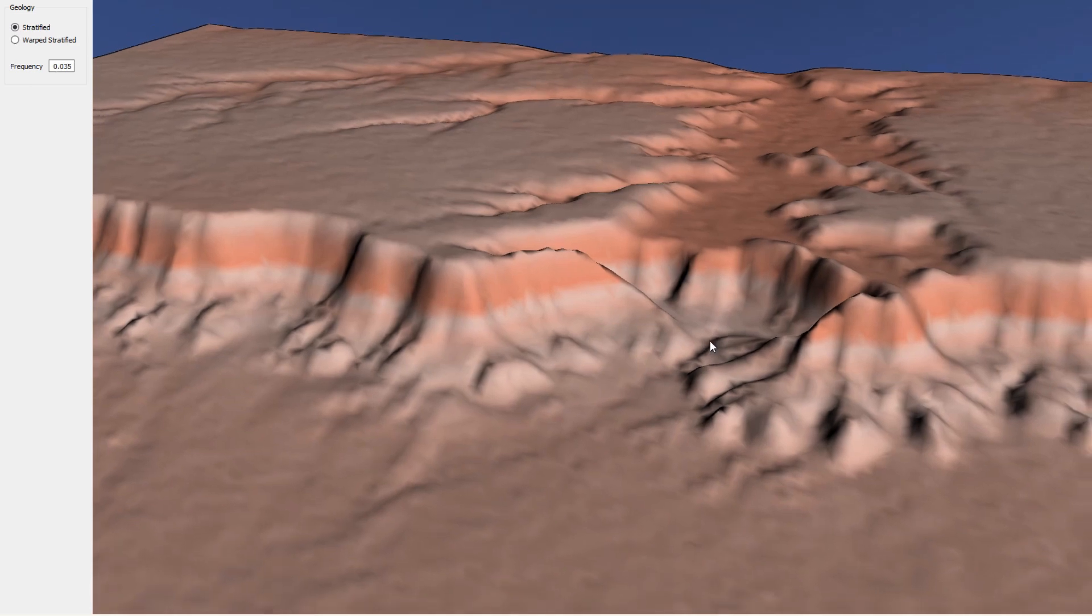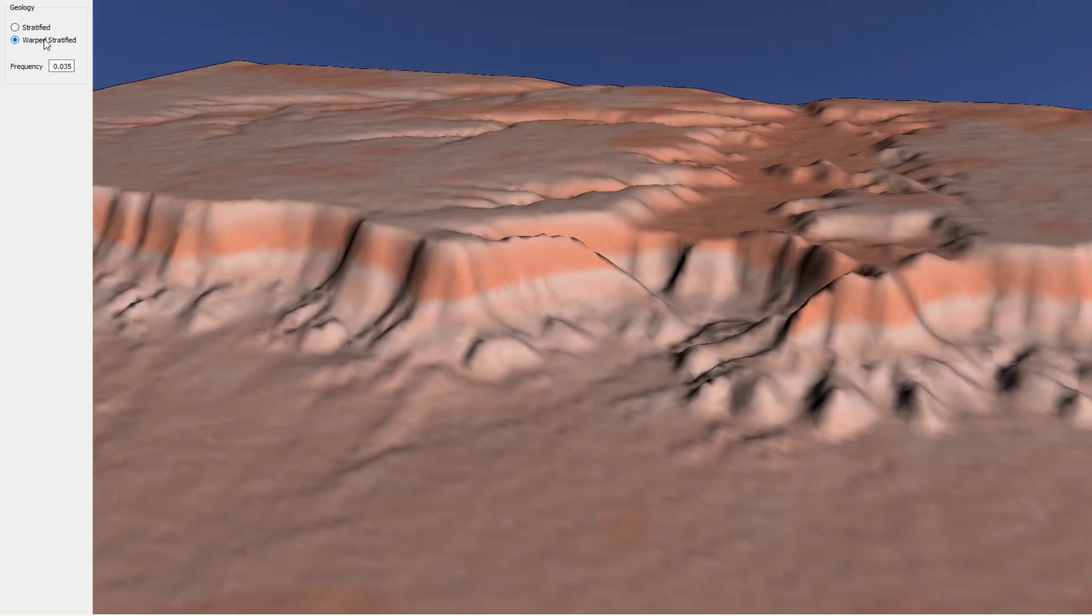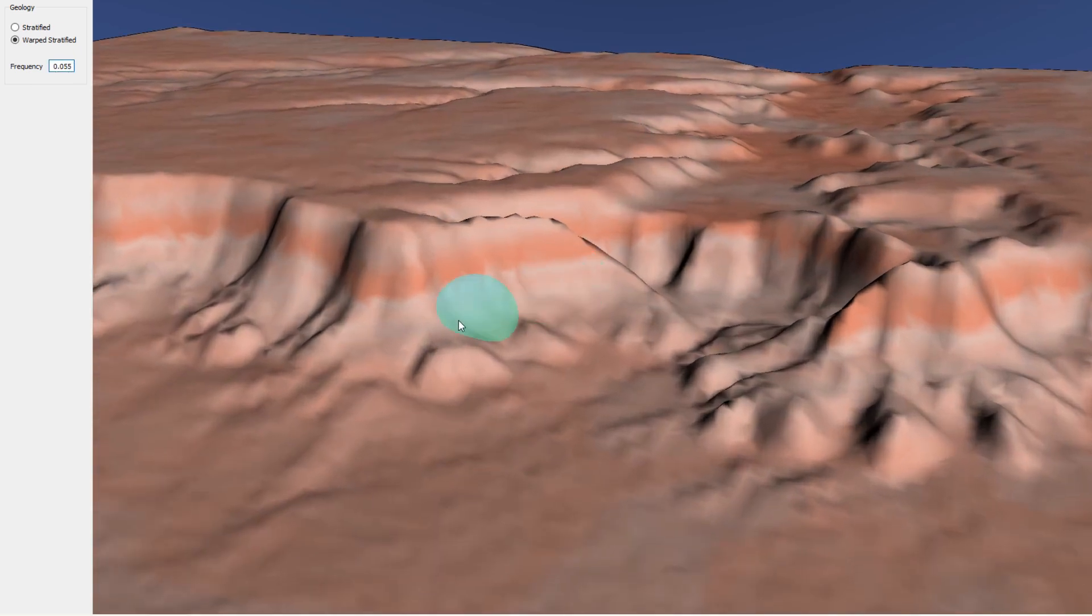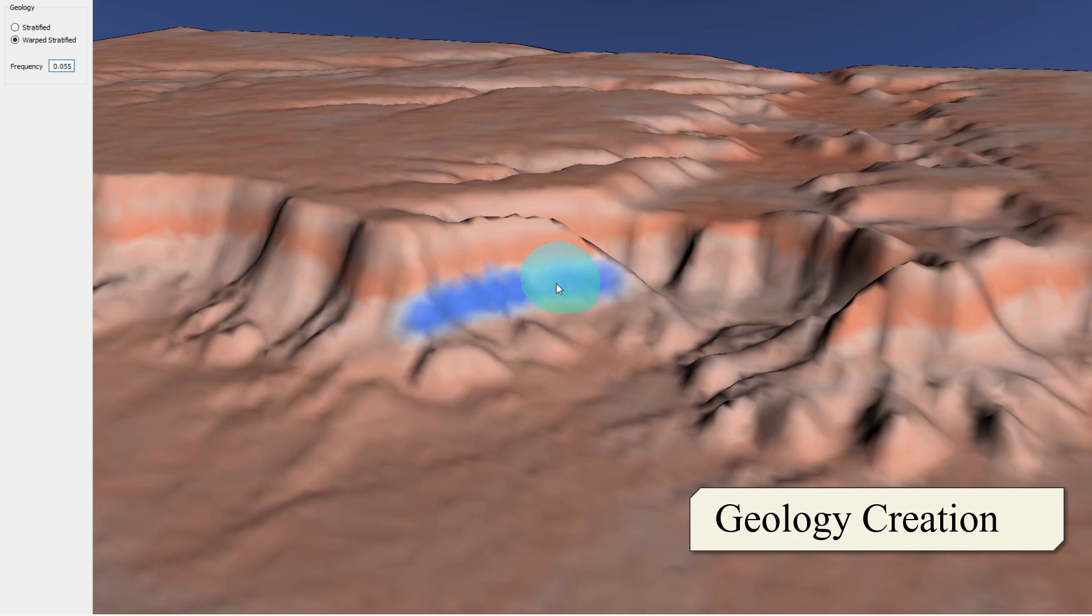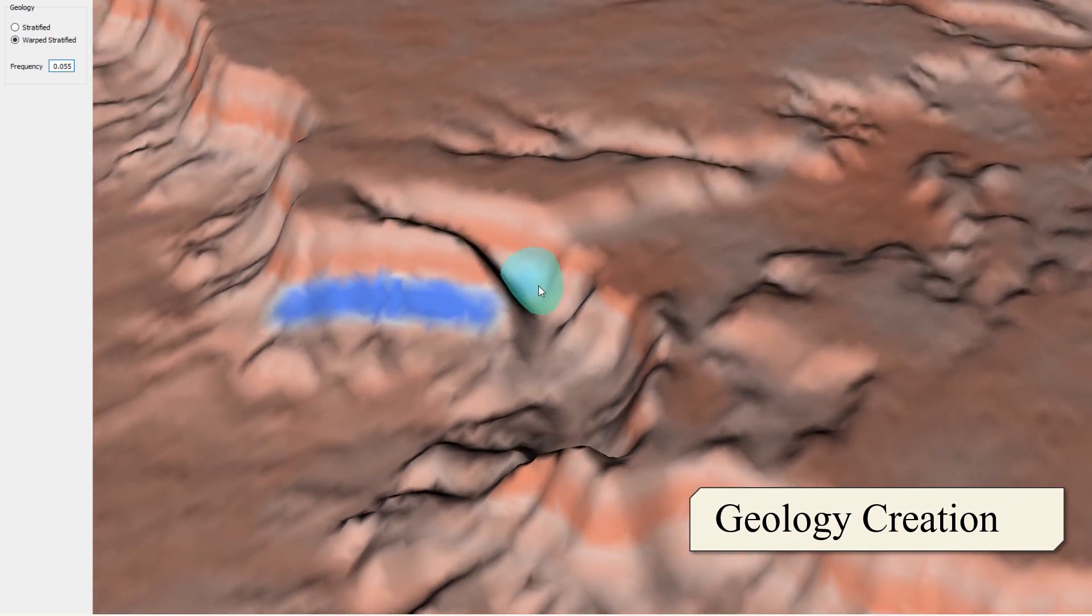Finally, we show that our model is completely editable in real time and the user is able to interactively modify the 3D structure of the terrain. At first, the user can choose between several types of geology and modify it in real time with skeletal brushes.